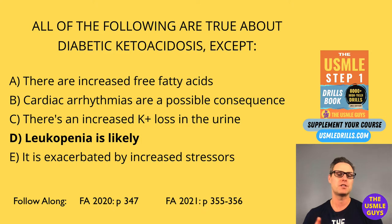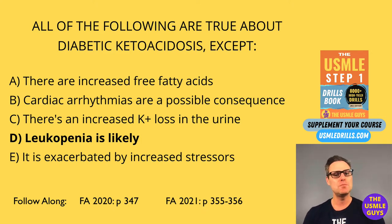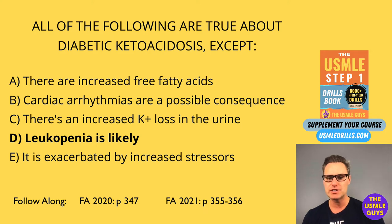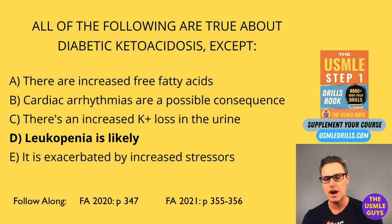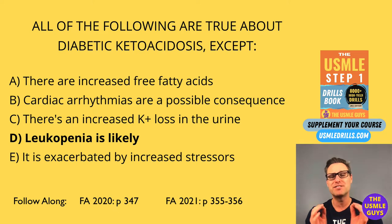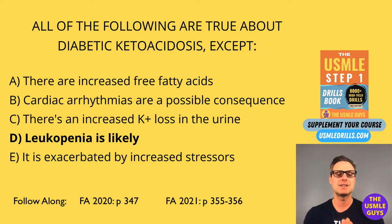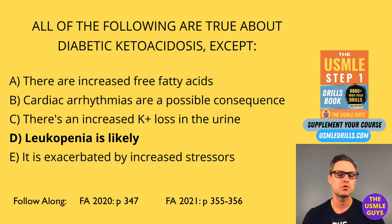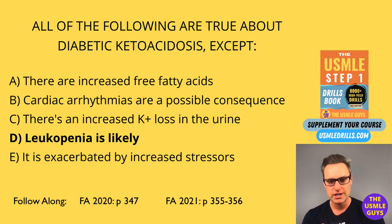The presentation is often with thirst, polyuria, and lethargy. You might see focal neural deficits and seizures. This is characterized by severe hyperglycemia, oftentimes above 600 milligrams per deciliter, and serum osmolalities above 320 milliosmoles per kilogram. But you'll see normal pH and no signs of ketones.